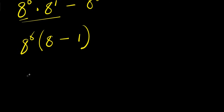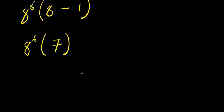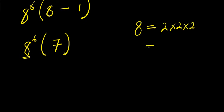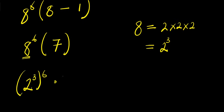So from here we have 8 power 6 times 8 minus 1, and this is 7. So what we are going to do is express this 8 in terms of 2: 8 equals 2 times 2 times 2, and this is 2 power 3. So this would be 2 to the power 3, to the power 6, times 7.